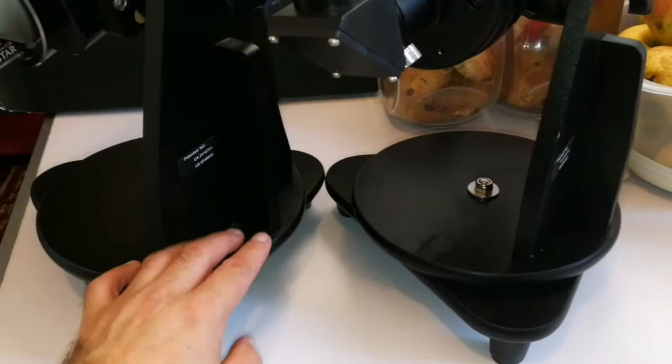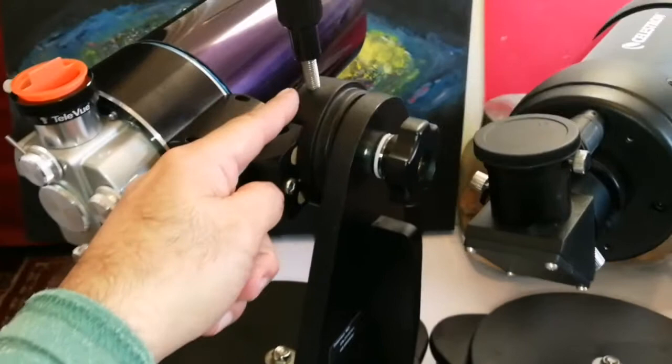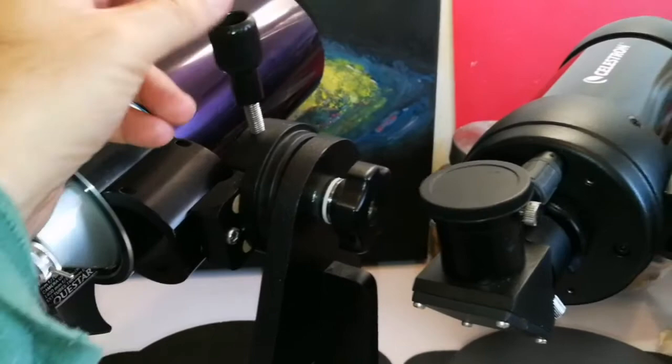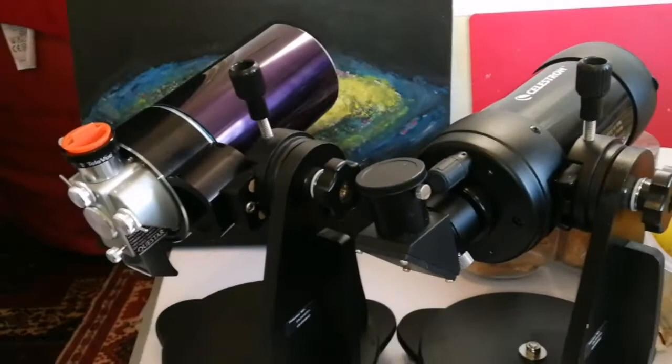Both of them are in the Skywatcher Heritage 100P Dobsonian stand, because you can actually attach anything which has a dovetail, and adjust it. You can move it up and down, turn it around. It's really good, versatile, and I really enjoy this too.